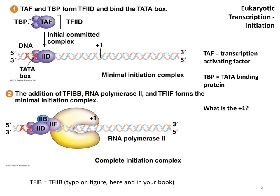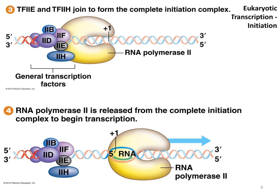Once this occurs, then, like a domino effect, additional transcription factors — specifically TF1BB, TF2F, and RNA polymerase II — bind to form what is referred to as the complete initiation complex. RNA polymerase II tells us this is a coding gene. Now we are almost ready to start. The last two general transcription factors, TF2E and TF2H, then bind, and now we have an intact initiation complex with RNA polymerase II present as well. It's starting to look pretty crowded.